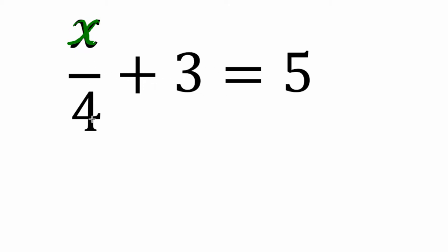So a number divided by 4 plus 3 is 5. I'm thinking that number to begin with has to be bigger than 5. So to check that and see if it's making sense, let's do some calculations.